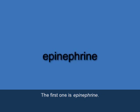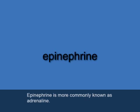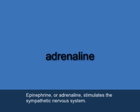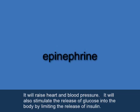We have two other secretions discussed in this chapter. The first is epinephrine (E-P-I-N-E-P-H-R-I-N-E), more commonly known as adrenaline. Epinephrine, or adrenaline, stimulates the sympathetic nervous system. It will raise heart rate and blood pressure, and it stimulates the release of glucose into the body by limiting the release of insulin.